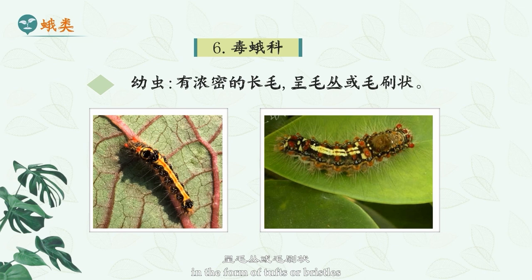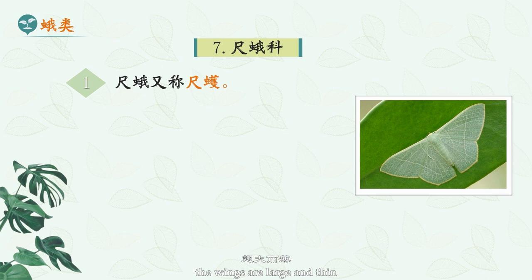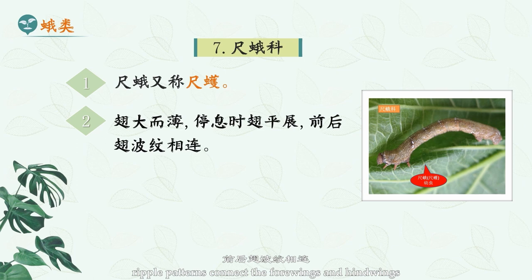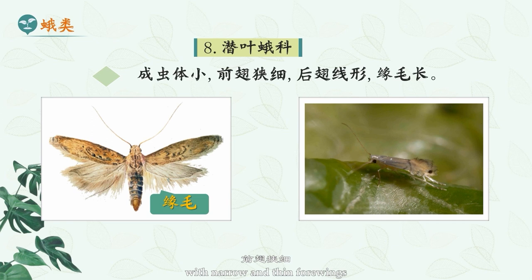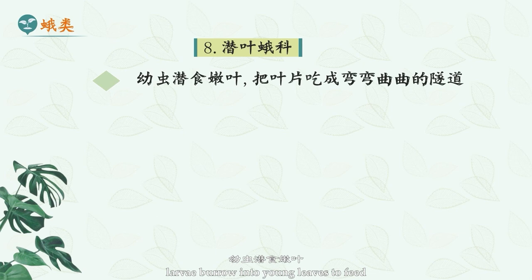Geometridae: also known as inchworm. The wings are large and thin. When resting, the wings are spreading. Ripple patterns connect the forewings and hindwings. The larvae have only two pairs of ventral legs. When walking, the body is in the shape of a bridge, contracting and expanding. Lyonetiidae: adult body is small, with narrow and thin forewings and filiform hindwings; the fringe is long. Larvae burrow into young leaves to feed, eating them into curved tunnel shapes.